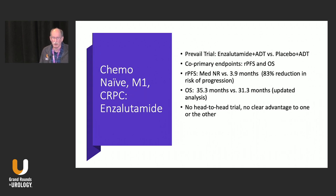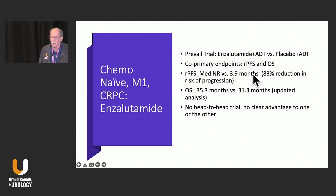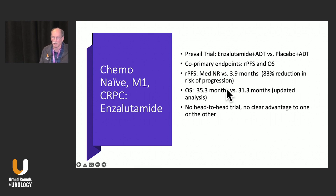In the chemo-naive M1 CRPC setting, the enzalutamide data from the PREVAIL trial showed that co-primary endpoints were met — an 83% reduction in risk of radiographic progression and a four-month overall survival advantage, very similar to what we saw with abiraterone. But clearly there are no head-to-head trials and in my opinion there is no clear advantage to one or the other.